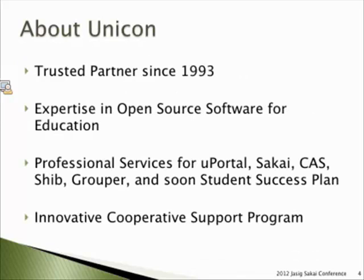A little bit about UNICON. UNICON has been a trusted partner since 1993. We have deep expertise in open source software for education — not just identity access management components, but portals and learning management systems, and now Student Success Plan, which is a new project with J-SIG. UNICON's business model is to support open source software for higher education, both by working directly with the communities and providing an innovative cooperative support program that ensures successful deployment and ongoing maintenance.